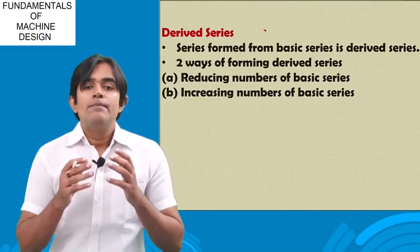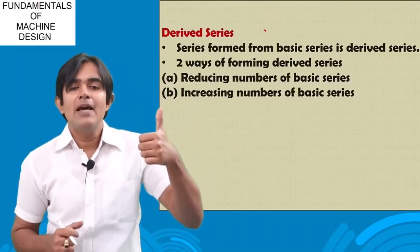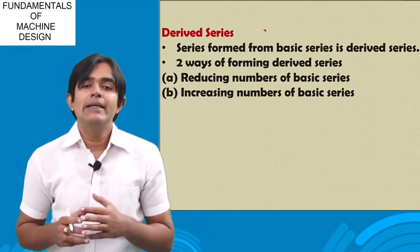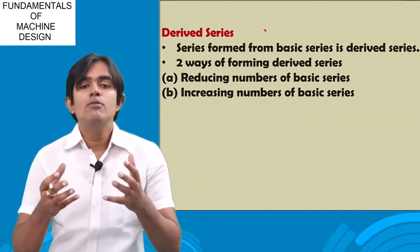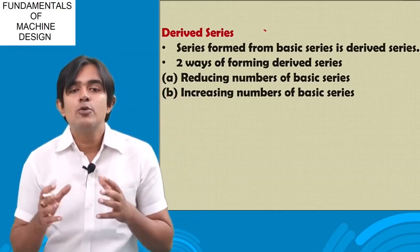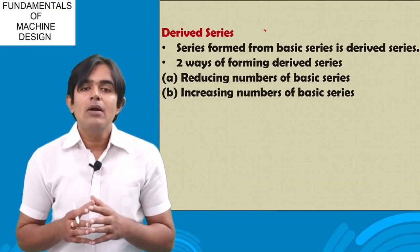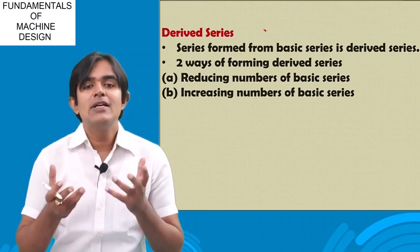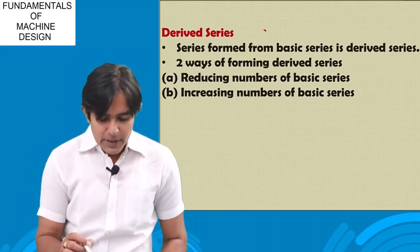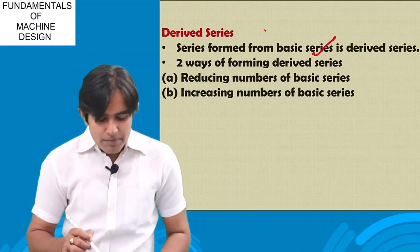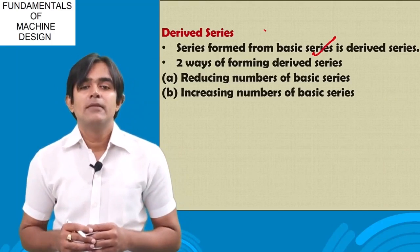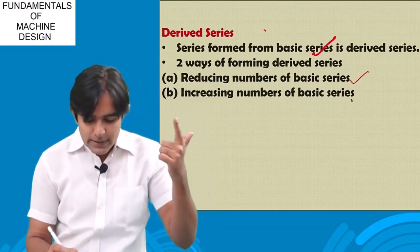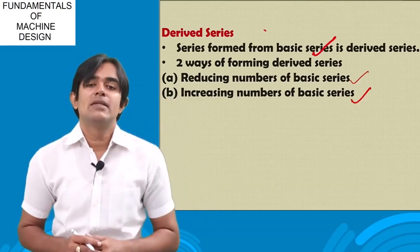The basic series has five numbers: R5, R10, R20, R40, and R80. But if I want more sizes or fewer sizes available in the market, I should go for the derived series. The derived series comes from the basic series itself — it is either reducing or increasing the numbers of the basic series.